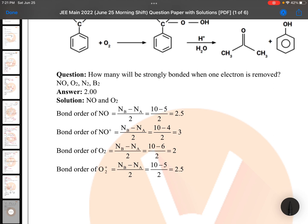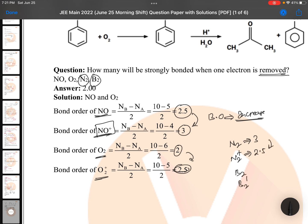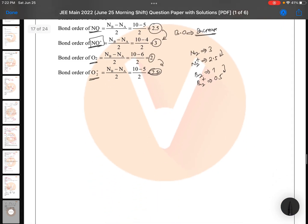How many will be strongly bonded when one electron is removed? One electron is removed is saying. So NO bond order is 2.5, NO+ one electron after removal, 3. So bond order increase means strongly bonded. Same case: O2 bond order 2, O2+ bond order 2.5. In my earlier video also about bond order I gave you one shortcut, you just go through with that afternoon paper also. And here N2 and B2: if you see N2 bond order is 3, N2+ bond order is 2.5, so this is decreased. B2 case also same thing: B2+ B2 bond order will be 1, B2+ bond order will be 0.5, decreased.